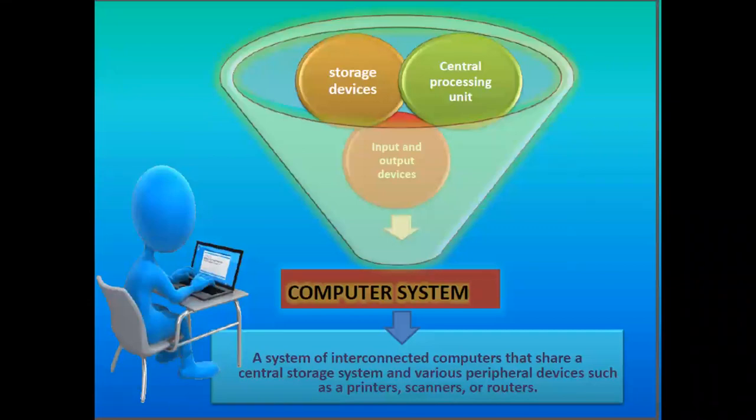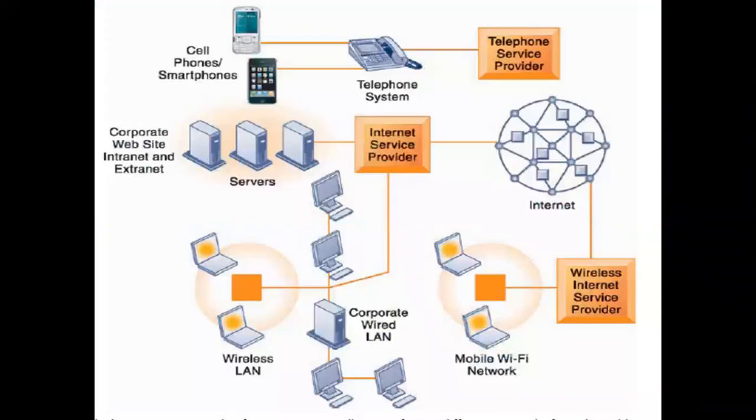A computer system is a system of interconnected computers that share a central storage system and various peripheral devices such as printers, scanners, or routers. It includes storage devices, central processing units, and input and output devices.